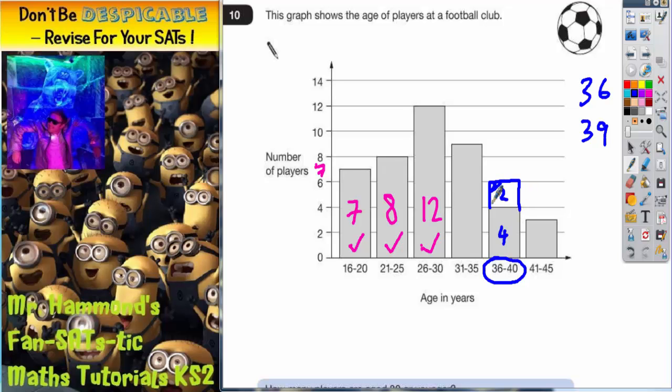So all you need to do is extend this bar to show it has an extra 2. You could shade it in if you want, but you don't have to. As long as it's leveled, that bar is now leveled with 6. That is the correct answer.